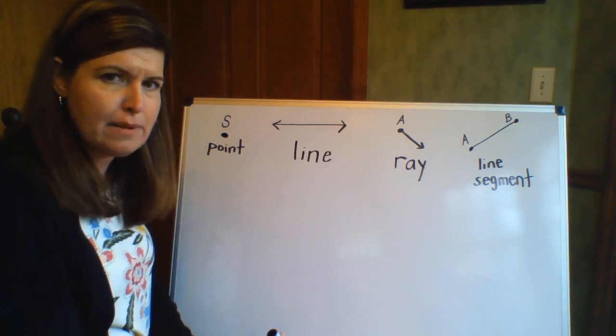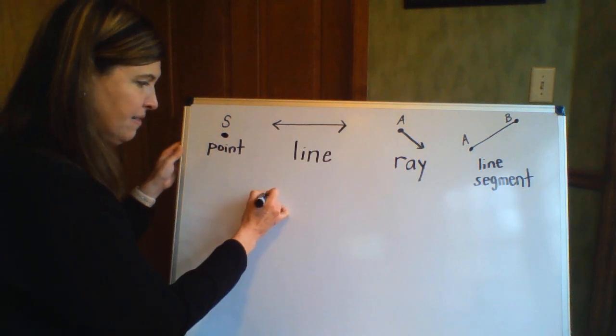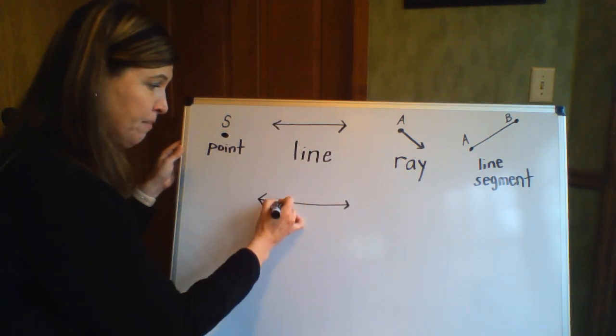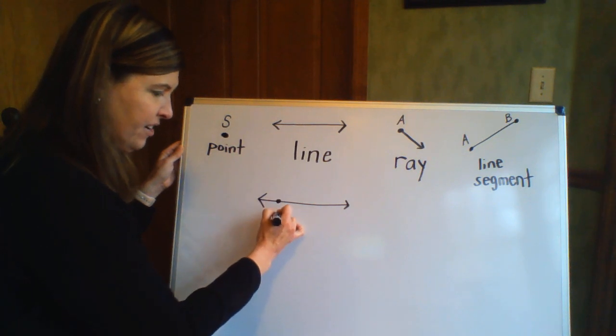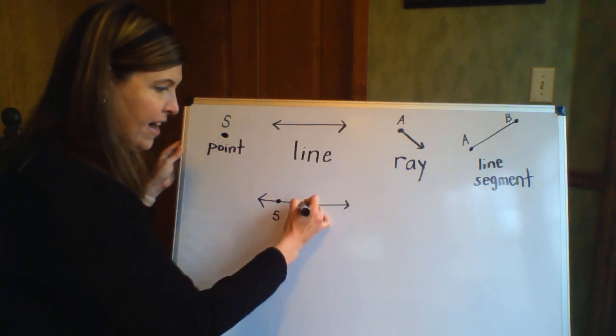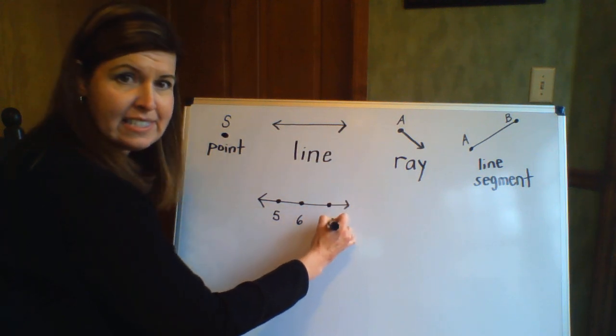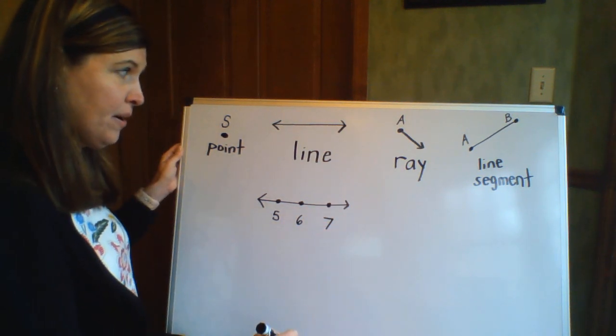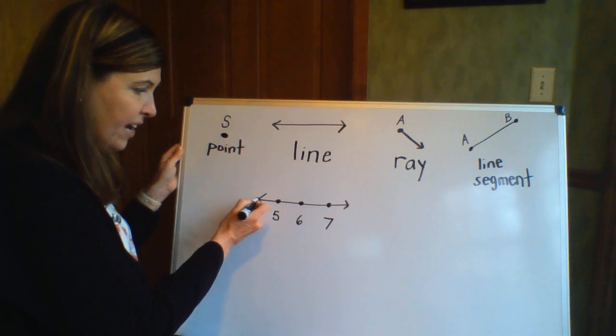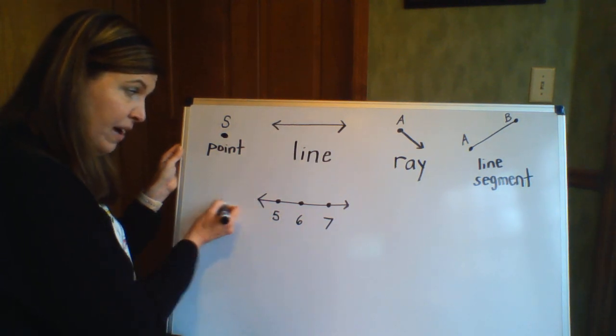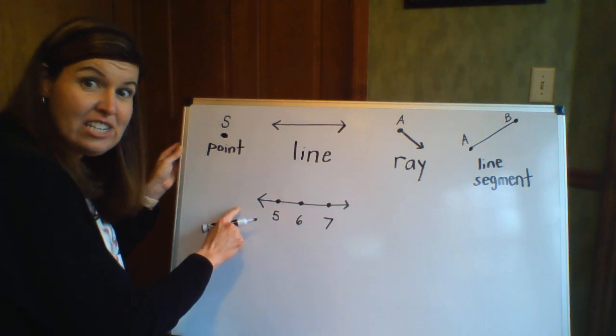So if you've noticed, sometimes when there have been number lines and it's just part of a number line, let's say you have points on here and you have five, six, seven on that number line. What these arrows mean is there are numbers this direction, which would be like four, three, two, one, and then negative numbers.